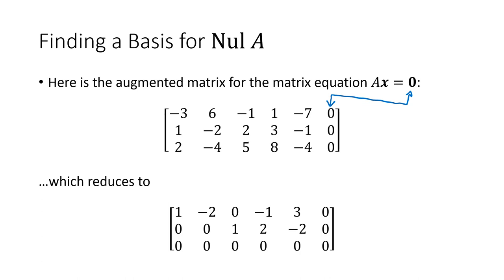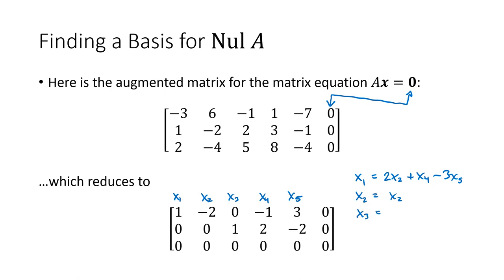Let's recall how to put together the parametric solution. The columns correspond to variables x1, x2, x3, x4, and x5. Writing the general solution by solving each equation for the basic variable: x1 = 2x2 + x4 − 3x5. x2 is free, so x2 = x2. From the second row, x3 = −2x4 + 2x5. x4 is free (x4 = x4), and x5 is free (x5 = x5).